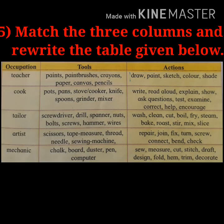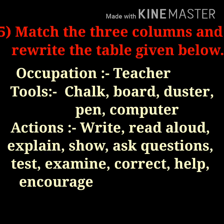Question number five. Match the three columns and rewrite the table given below: occupation, tools, and actions. Example — occupation: teacher. Tools: chalk, board, duster, pen, computer.